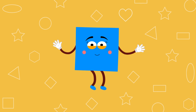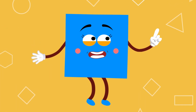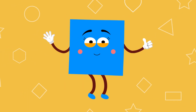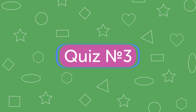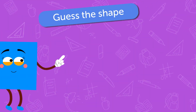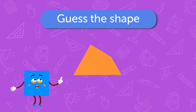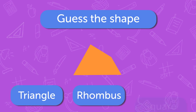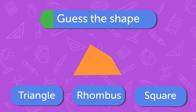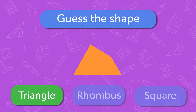Phew, that last question was a difficult one. Our final quiz is harder, but I know you can do it. Get ready, here we go! You will see part of a shape. You have to guess what the shape is. Good luck. Triangle, Rhombus, Square. Triangle.